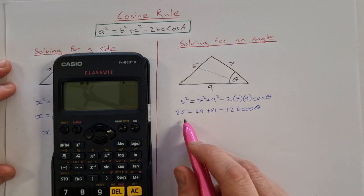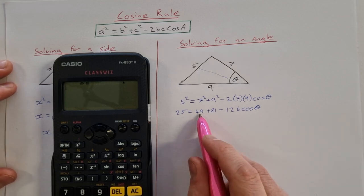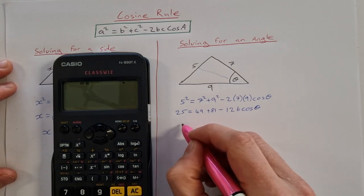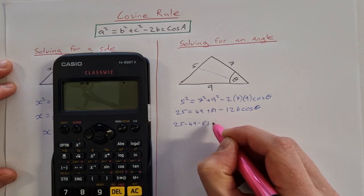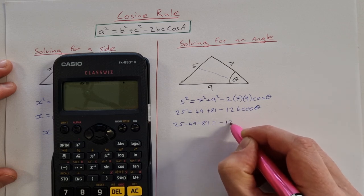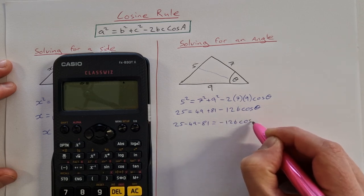And then we go and tidy up a bit more. So it'll be 25 minus 49 minus 81. 25 minus the 49 minus the 81 is equal to minus 126 cos theta.